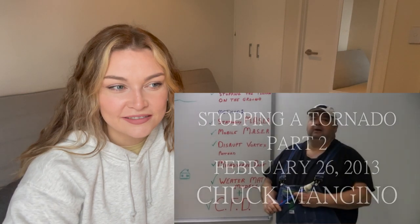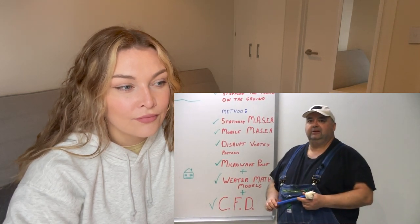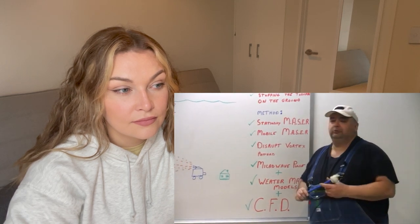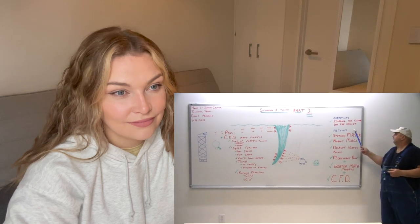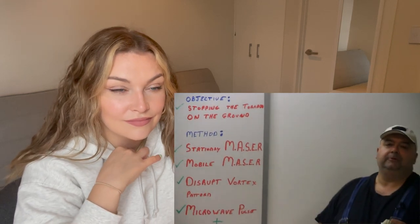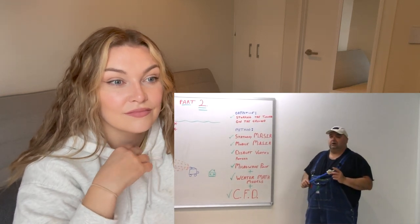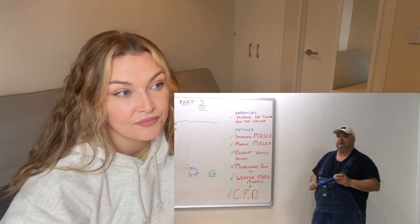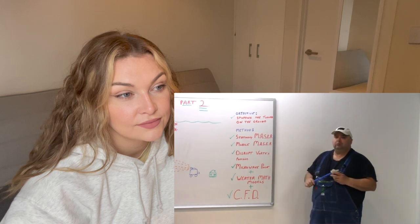Hello, my name is Chuck Minchino. Check out part one if you are interested. I'm at the Hands-On Science Center here in Tullahoma, Tennessee. The date is the 26th of February 2013. This is part two of the Stopping a Tornado series. The objective is stopping the tornado while it's on the ground. In part one, we used computational fluid dynamics and two airborne masers to disrupt the pattern before the tornado actually touched down. This is the second part of a three-part series, and the objective here is stopping the tornado once it's on the ground.